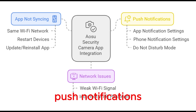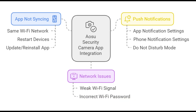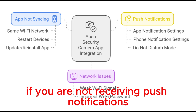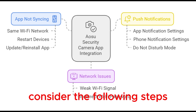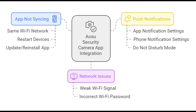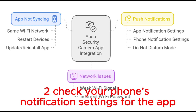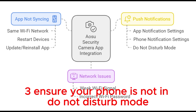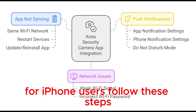Push Notifications: If you are not receiving push notifications, consider the following steps. 1. Ensure notifications are enabled in the app settings. 2. Check your phone's notification settings for the app. 3. Ensure your phone is not in Do Not Disturb mode.